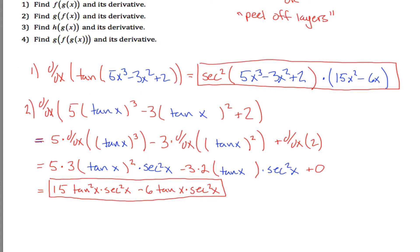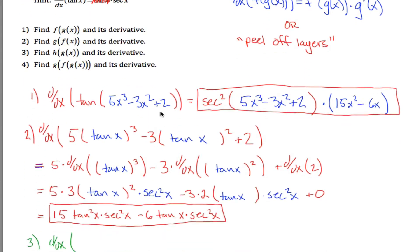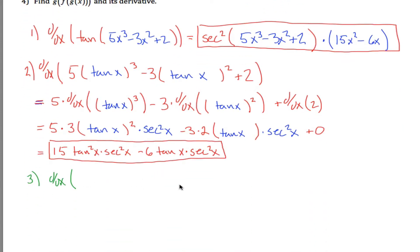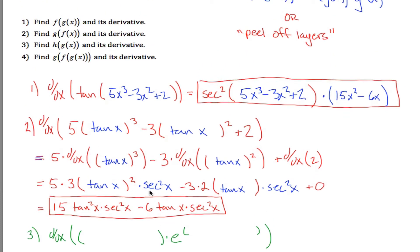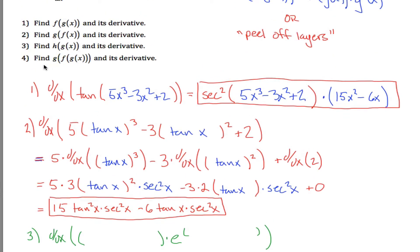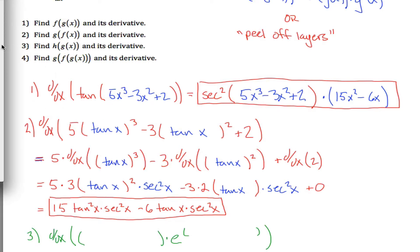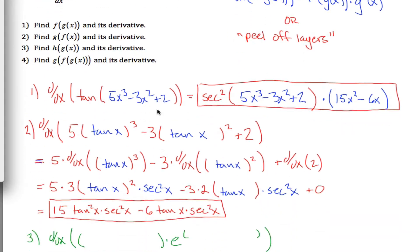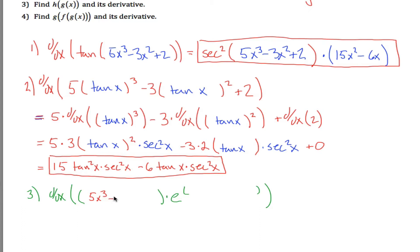Number 3 — I need some extra colors because I have several different layers. What it's asking me to do is find the derivative of h of g of x. h of x is x times e to the x, so everywhere I'd write x I write g of x instead. g of x equals 5x cubed minus 3x squared plus 2. So really the question is asking me to take the derivative of this big expression.